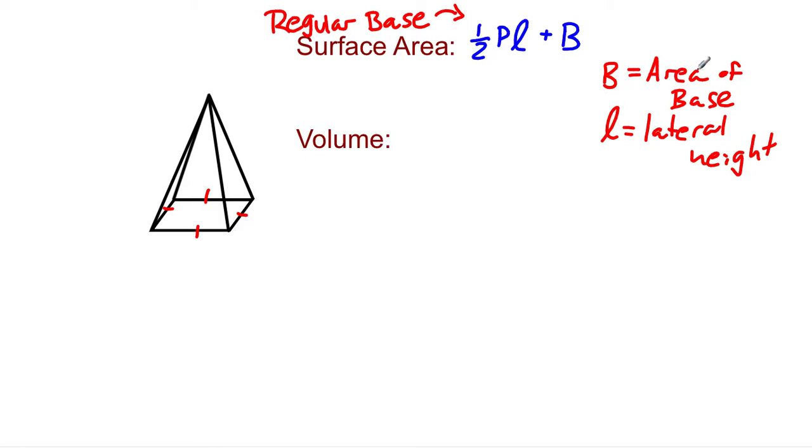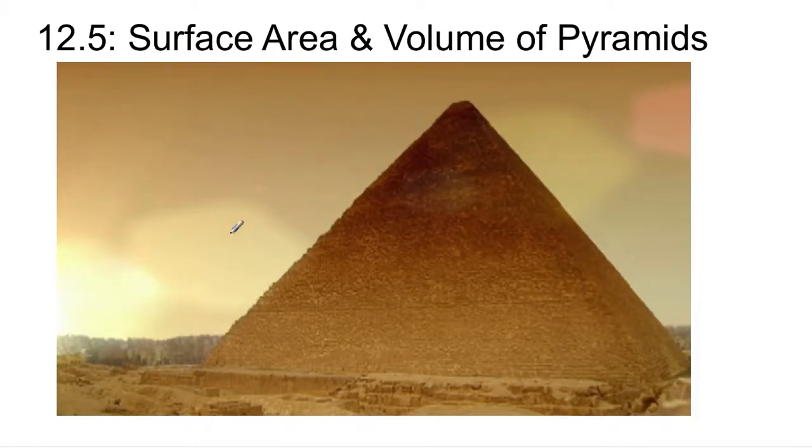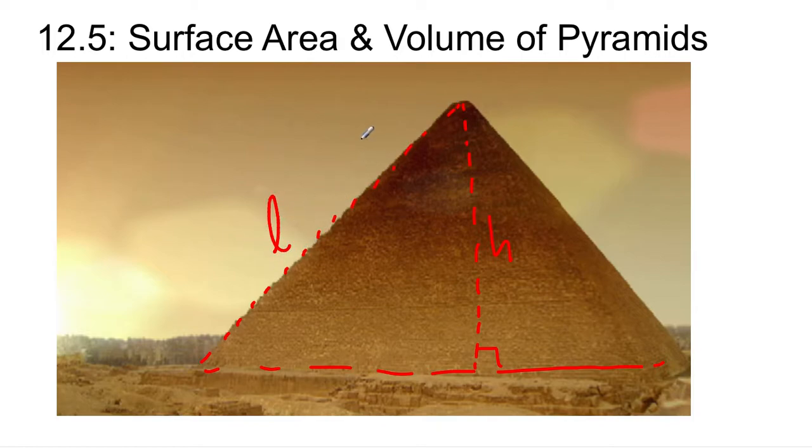So I'm confident we understand what the area of the base means, but what about the lateral height? Well, if we go back to this picture of a pyramid, imagine looking from this head on and you just see a triangle. Well, the height, as we know, is perpendicular to the base, so it's going to be that vertical distance there. That's the height. The lateral height is along the edge. This is L. That's the lateral height.